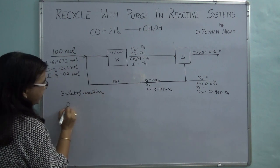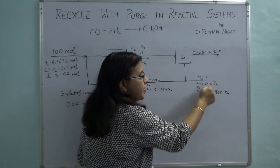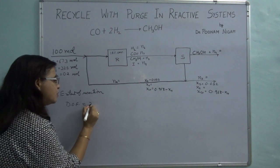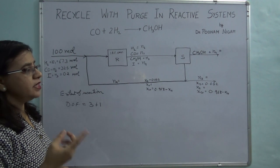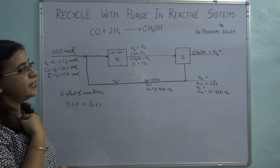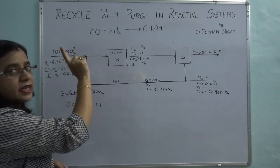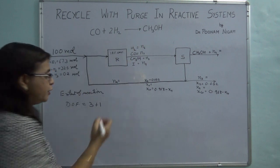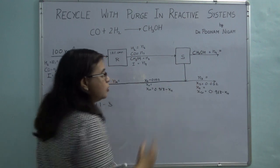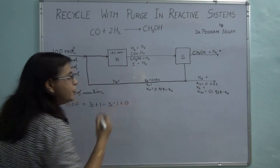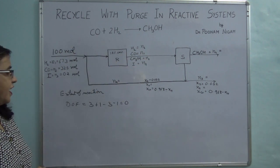Let's check the degree of freedom for the overall system using the extent of reaction method. Unknowns are N4, N5, and x_H — that's 3 unknowns. There is 1 reaction, giving 1 extent variable ζ. There are 3 reactive species, so 3 species balance equations, plus 1 inert balance. Degree of freedom = 3 + 1 − 3 − 1 − 1 = 0. So we can start solving the overall system.